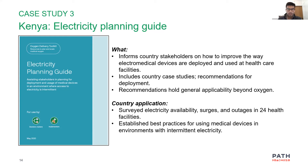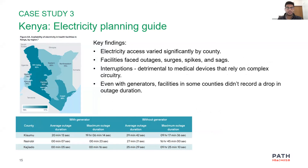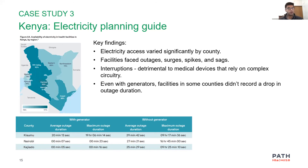Just prior to publishing the guide, PATH completed a survey of different facilities across a few counties in Kenya. From initial data, we noted different levels of electricity access across counties. As you can see from the map, the eastern and northeastern parts of the country had a lower percentage of facilities reporting electricity availability compared to Nairobi and the central region. But as mentioned, availability alone is only one part of the question.